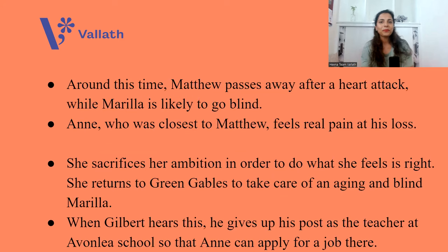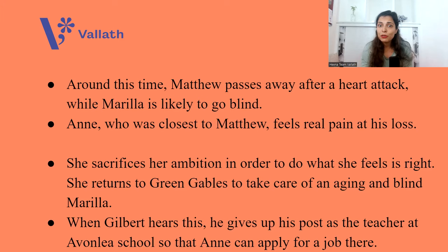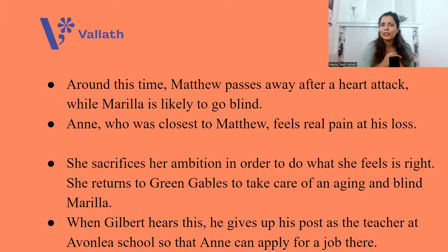Around this time, something sad happens. Matthew, who at the start of the novel was 60 years old, passes away after a heart attack at Green Gables, while Marilla is likely to go blind — she has poor eyesight and could lose her vision anytime. Anne, who was closest to Matthew, feels real pain at his loss.